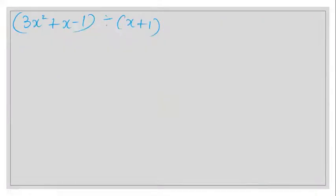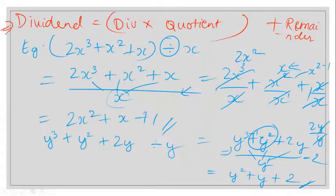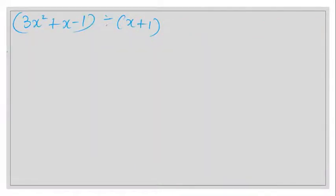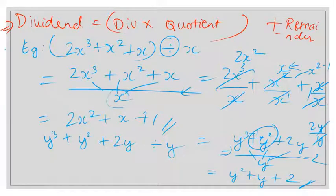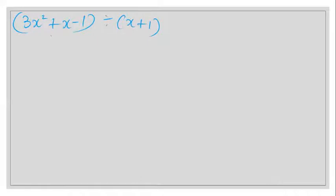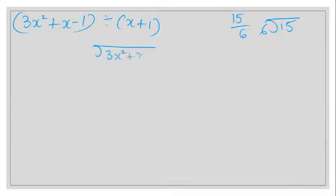Now let's get into a new method of division. We're going to use a different method — a long division approach — for (3x² + x - 1) ÷ (x + 1). We bring it into standard form: 3x² + x - 1 under the division sign, with x + 1 as the divisor.